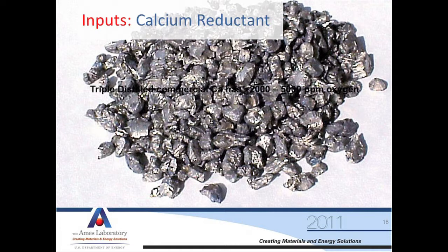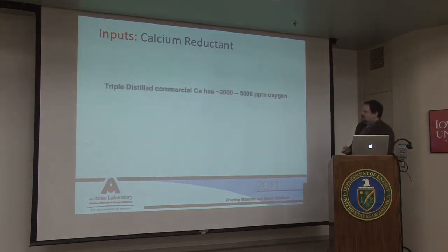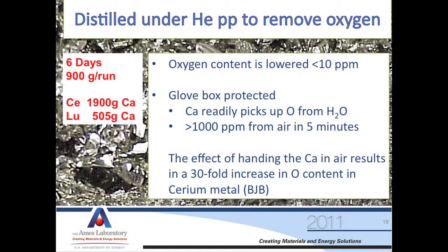Our next input is calcium. We buy triple distilled commercial calcium — that even sounds pure, like buying extra virgin olive oil. However, triple distilled calcium has roughly 2,000 to 5,000 parts per million oxygen in it. So if we start with that impurity, it'll probably stay throughout the process to some extent. So we sublime or distill our calcium further over the course of about a week, and we can make material that's got 10 parts per million oxygen in it. We can limit our oxygen exposure in our processing stream by starting with the best material possible. You have to handle this stuff carefully, because if you let it get exposed to air even for a few minutes, all that hard work into reducing the oxygen just gets destroyed.